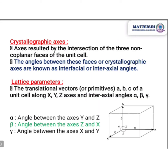Now let us see about the crystallographic axes. These axes result from the intersection of the three coplanar faces of the unit cell. The angles between these axes are known as interfacial or interaxial angles, represented as alpha, beta, and gamma. Together with the lattice translation vectors a, b, c along the x, y, z directions, these are called lattice parameters.